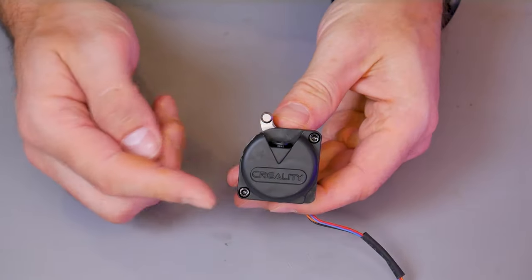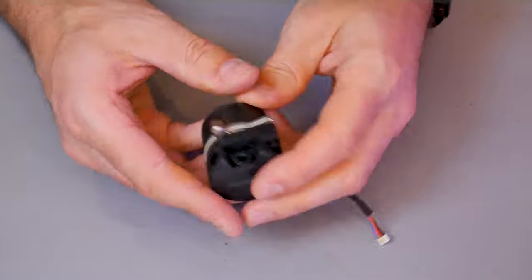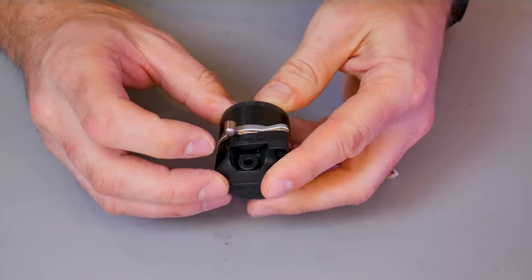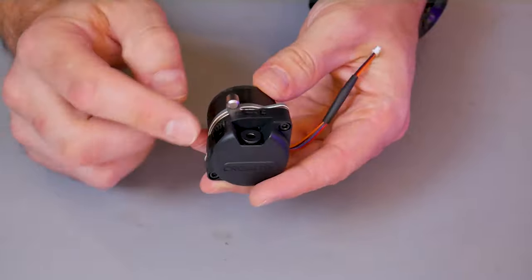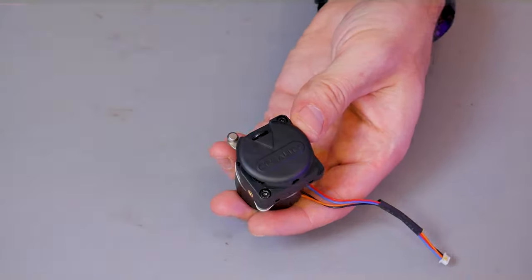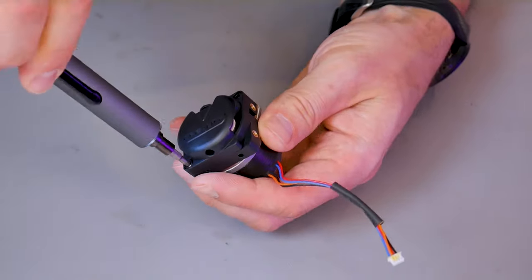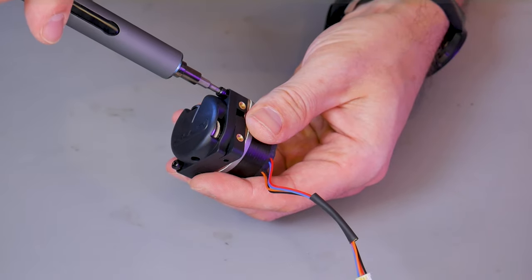Bring your extruder module to a well-lit area because we're going to be tearing it down. You can see in my case here it doesn't matter if I lock or unlock the lever. These gears are totally jammed up. I can't turn them by hand.